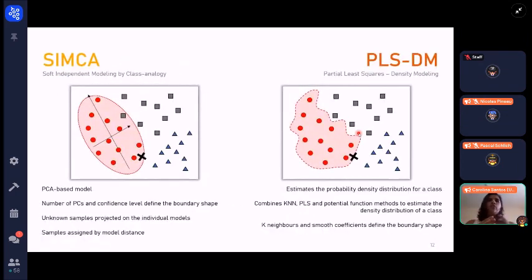We tried to compare SIMCA and PLSDM. SIMCA is a PCA-based model. With the number of PCs that we define at the confidence level, we will define the shape of our boundaries in the target class. When we have unknown projected samples in the individual model, we can assign this sample to the class or not based on our residuals, usually the Q residual or the Hotelling's T-squared values.